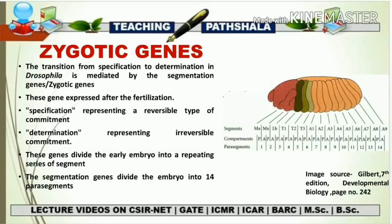Let us understand with an example: one cell is A, committed to thorax development in Drosophila, and another cell is B, committed to abdomen development. If cell A is placed with cell B, under specification cell A may switch and also contribute to abdomen formation — its commitment was fluctuated and changed based on environment. That is called specification, a reversible commitment.